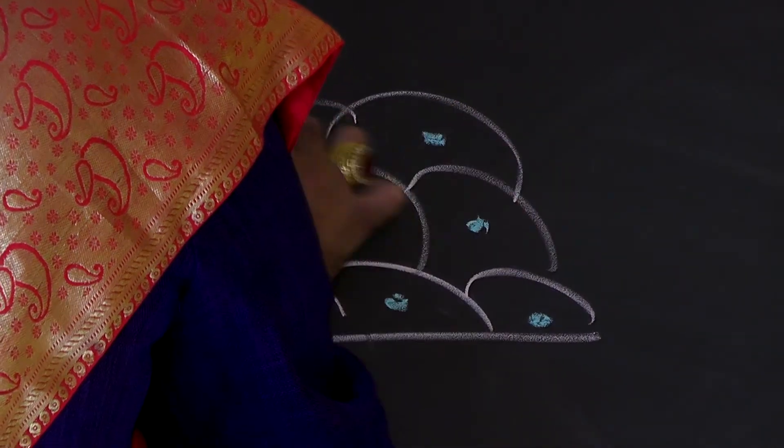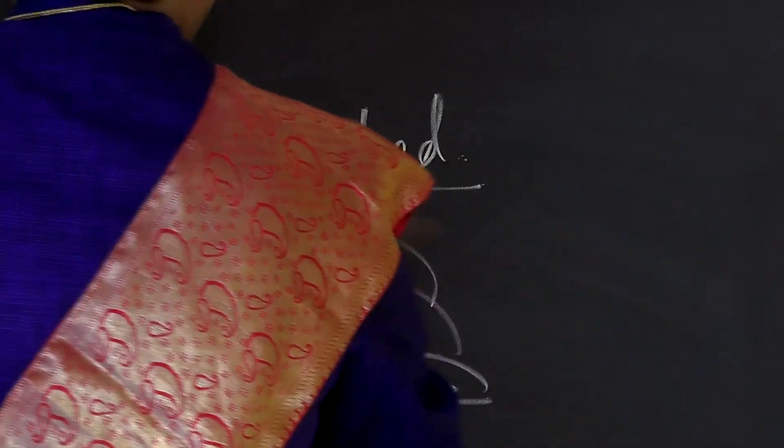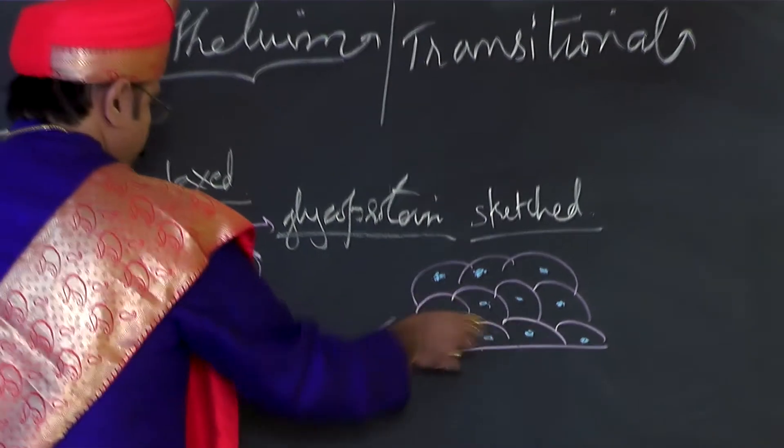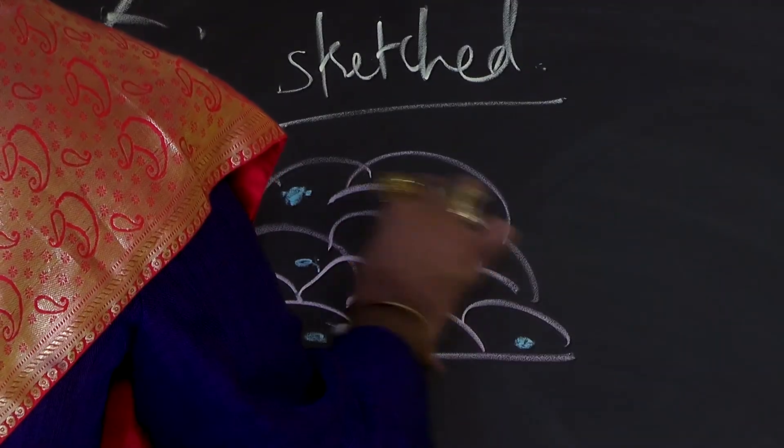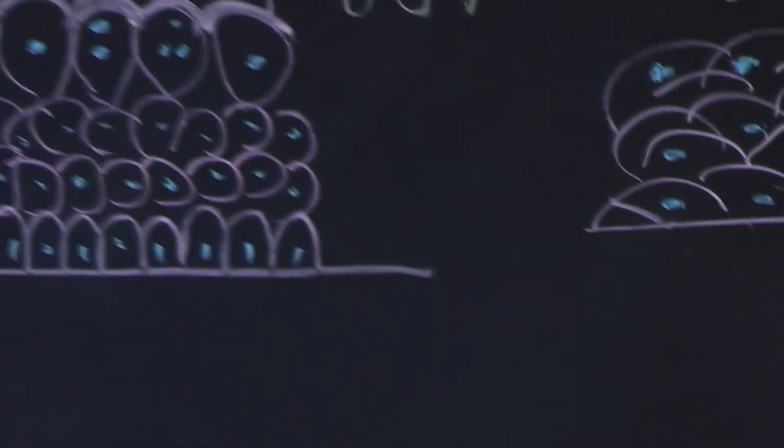This flattened appearance occurs when the urinary bladder is stretched—that is, filled by urine. There is a change in the shape; they are more flat. You can draw them as more flat. This is how you get the transitional epithelium.